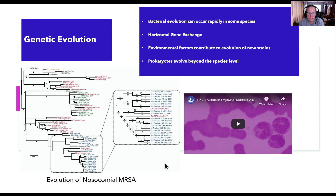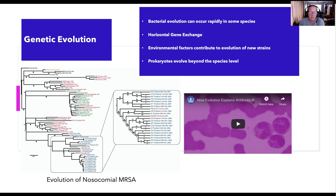Prokaryotic organisms oftentimes evolve past the genus species level into what we call subspecies or even down into sub-subspecies, which may be like strains of E. coli or strains of Vibrio cholerae. There can be multiple bacteria of the same species that have very minor genetic differences, but those minor genetic differences can evolve those organisms to be quite deadly.